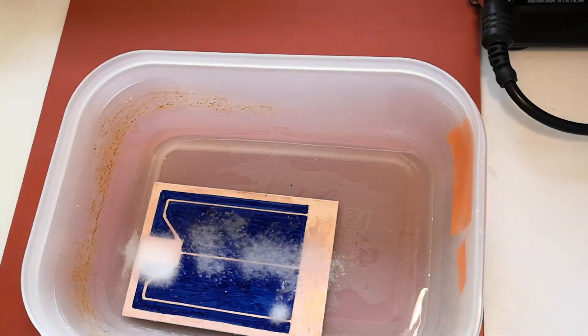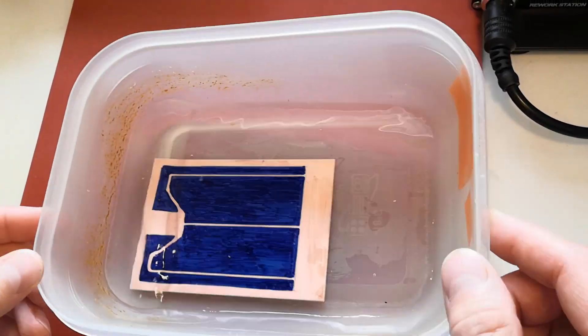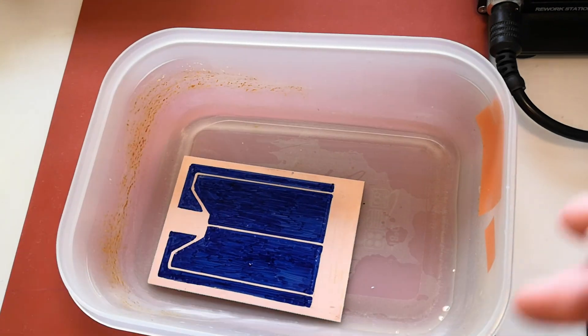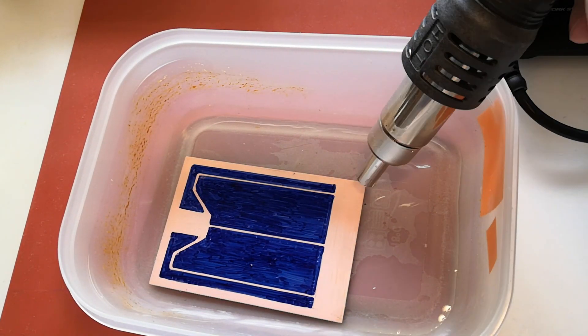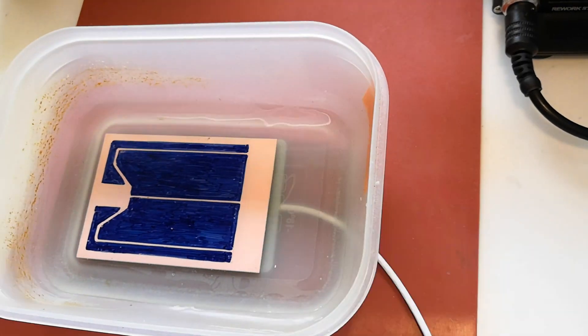It is so slow, let's put more etching stuff. Still slow, I'll try heating. I should have bought ferric chloride.